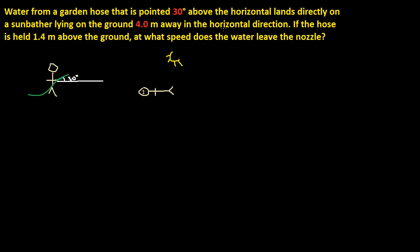Hi. This is a problem from the projectile motion WebAssign from AP Physics B class. It says water from a garden hose that is pointed 30 degrees above the horizontal lands directly on a sunbather lying on the ground 4 meters away in the horizontal direction. If the hose is held 1.4 meters above the ground, at what speed does the water leave the nozzle?